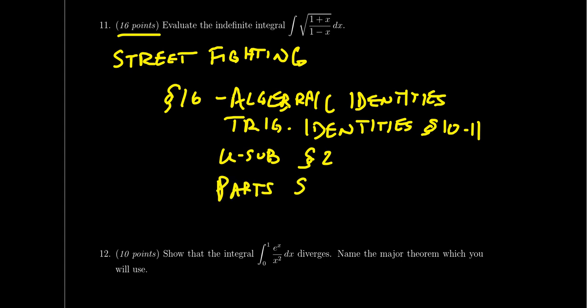Integration by parts might be necessary on these types of problems. In addition to u-subs, you might have to do a trig sub — looking at this particular problem, I don't see any sums or differences of squares, so probably don't need a trig sub, but maybe. Trig subs were introduced in lessons 12 and 13, and that might be very appropriate to use.